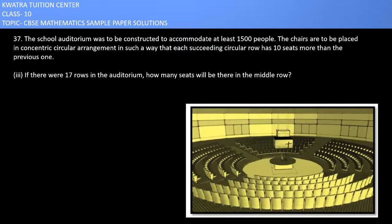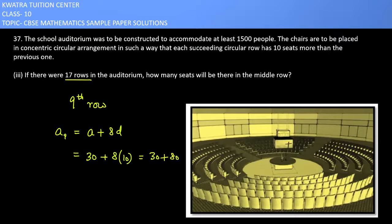Now the third part. It says if there were 17 rows in the auditorium, how many seats will be there in the middle row? The middle one from 17 rows is 9th row. a_9, a plus 8d, a is 30, d is 10. So yes, it would be 30 plus 80, or 110 seats.